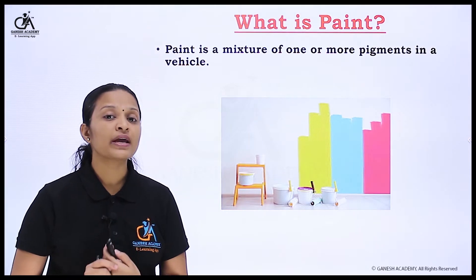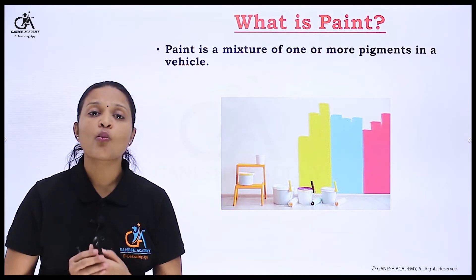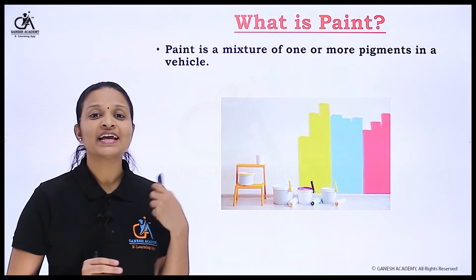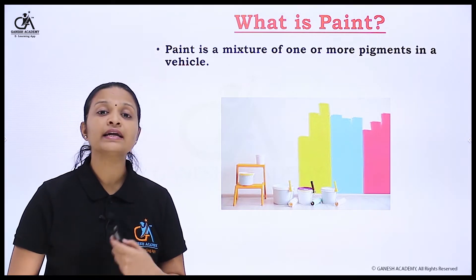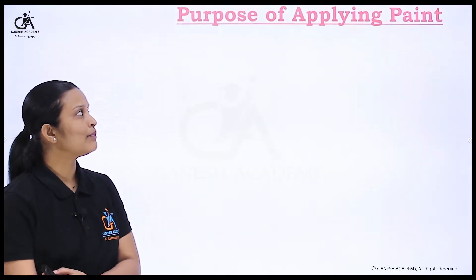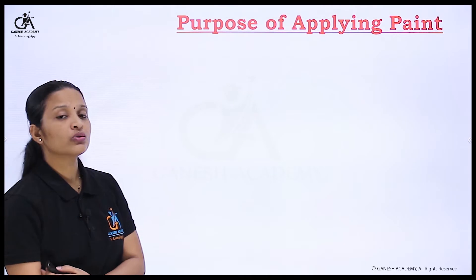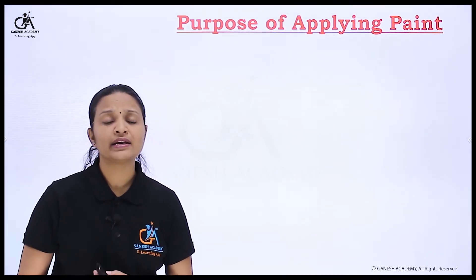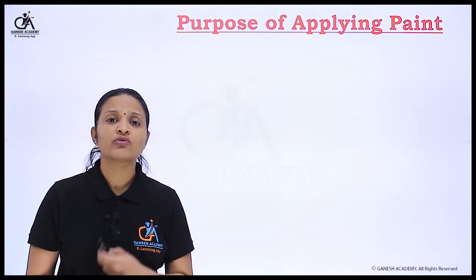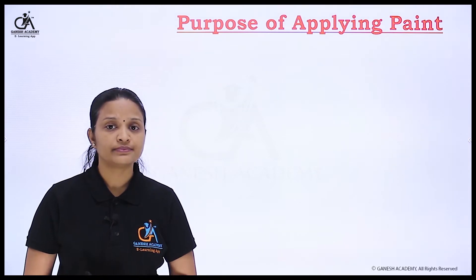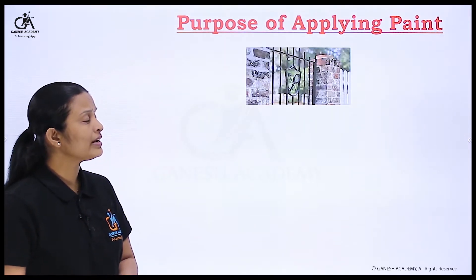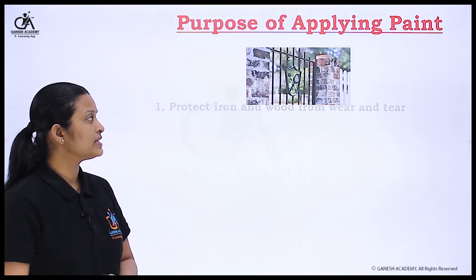So paint is a mixture of one or more pigments in a vehicle — that is what we call paint. In the next slide I will explain the purpose of applying paint and what is the purpose behind it.